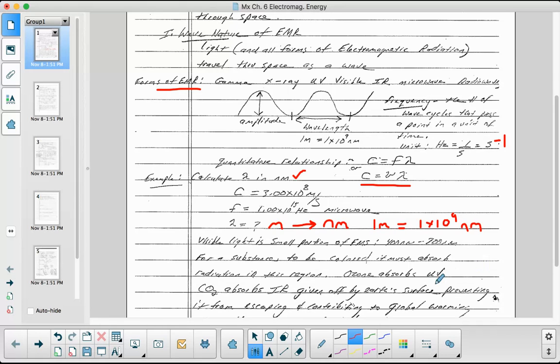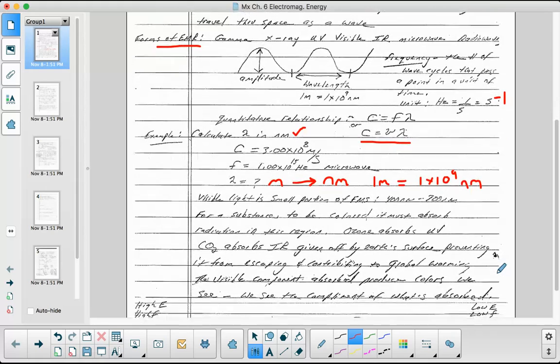These are a few examples of what type of radiation ozone absorbs and what carbon dioxide absorbs. Carbon dioxide absorbs infrared radiation that's given off by the Earth's surface, preventing it from escaping and contributing to global warming.